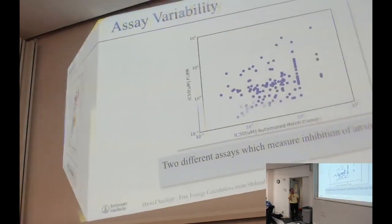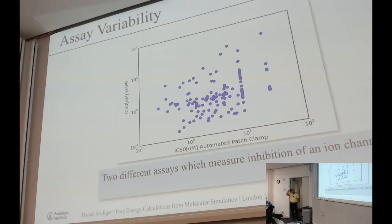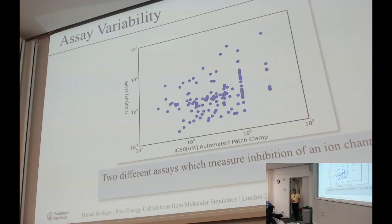And it can be even worse. These are two different types of assays, but they are actually supposed to measure the same thing: the inhibition of an ion channel. One is a flipper assay using calcium fluorescence, often used for high-throughput screening. The other is electrophysiology — an automated patch clamp — which cannot be used for that kind of throughput. Basically what you see is there is no correlation at all between the two assays, and that's simply the reality we are living in. Whenever you do methods development and compare computed numbers with experimental results, I highly recommend that you very carefully look at what kind of experiment you compare your data to.